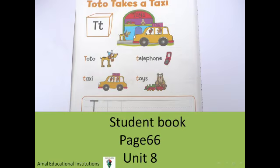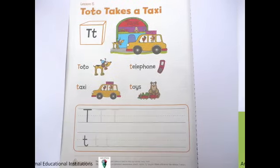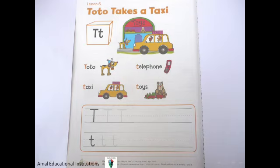Toto takes a taxi to the toy store. Let's pick up the letter T — T small letter, T capital letter, T small letter. Toto, Telephone, Taxi, Toys — T capital letter, T small letter.